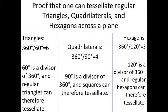360 degrees divided by the 90 degrees that makes up each interior angle of a regular quadrilateral or square gives us 4, showing us that 90 is a divisor of 360 and proving that squares can tessellate.